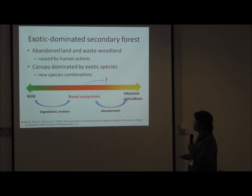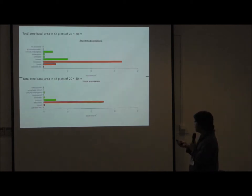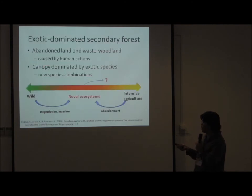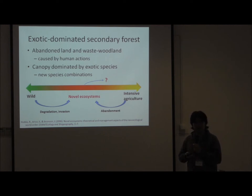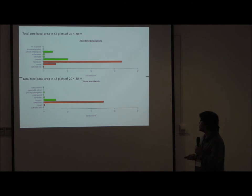The other forests seen throughout Singapore are actually exotic-dominated — abandoned from previous agriculture or wasteland being cleared again and invaded by exotic species. The canopy trees can be layered and there are many dominant exotic species. In this sense, it is somewhat like what researchers today call a 'novel ecosystem' — a man-made system dominated by a new combination of species not observed before.